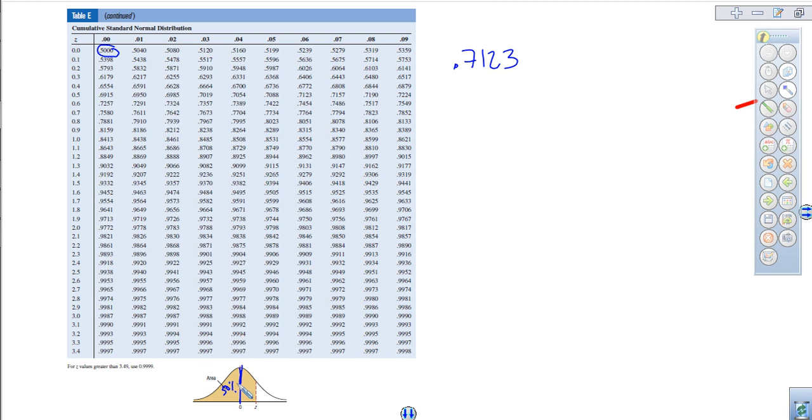So anything to the right of that, anything greater is going to be greater than 50%. So we're looking for 0.7123. So we start scanning through. There's 0.7019, 0.7054, and there it is, 0.7123.